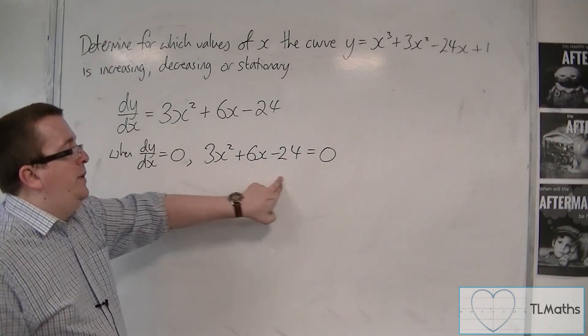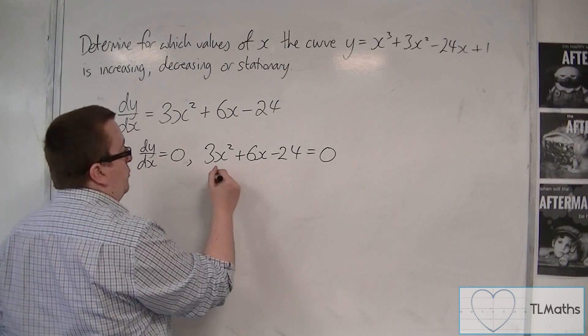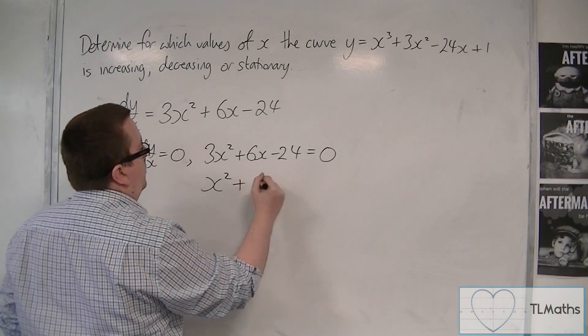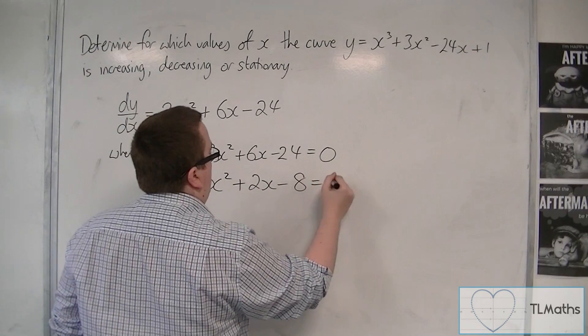From there, we can divide through by 3 to simplify this quadratic. And we're going to get x squared plus 2x minus 8 equals zero.